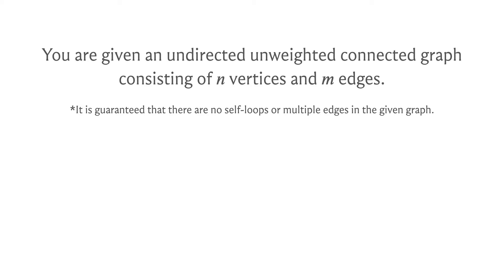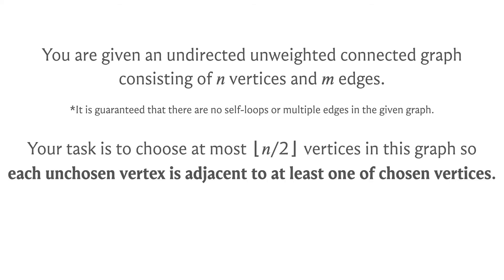What are we supposed to do? Well, we are supposed to figure out if we can find a subset of at most ⌊n/2⌋ vertices — so if n is odd, we want the smaller half — such that each unchosen vertex is adjacent to at least one of the chosen vertices.